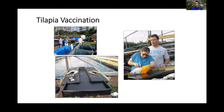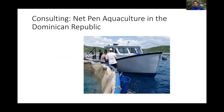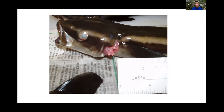We've actually worked with farms to vaccinate their fish. Fish can get a disease and we want to try to prevent that disease — some of these diseases we can actually develop a vaccine for with my colleagues. This was a tilapia facility where we vaccinated about 8,000 fish by hand. I also do consulting out of the country. This is me working with some folks in the Dominican Republic where they were having some problems with cobia — a big game fish in and around Florida.